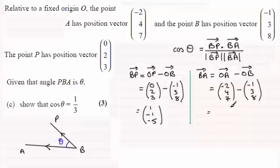And what do we get? We get (-1, 1, -1). All right, so that's our two vectors BP and BA.